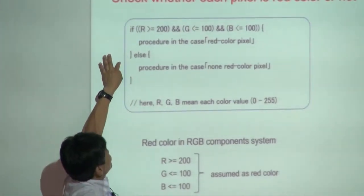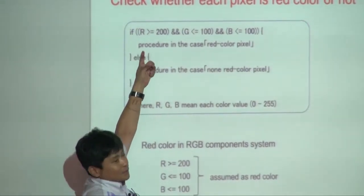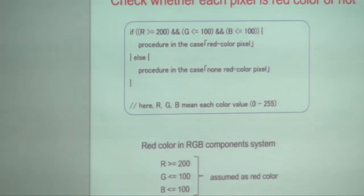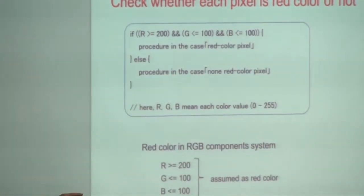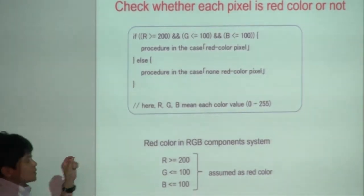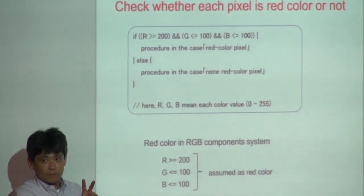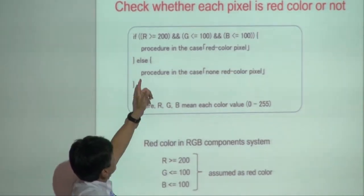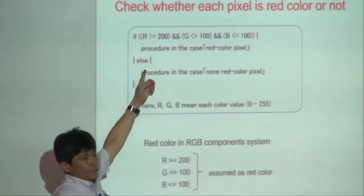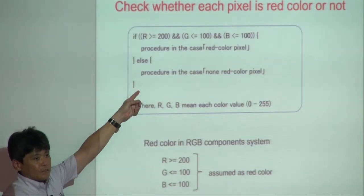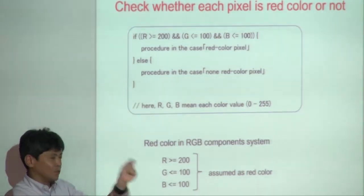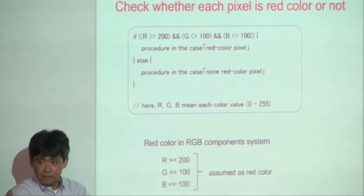To explain: each pixel consists of three bytes — red, green, and blue. Variables R, G, B correspond to these three color values respectively. Each variable has one byte. Using if-statements, you can check whether the corresponding pixel is red or another color.